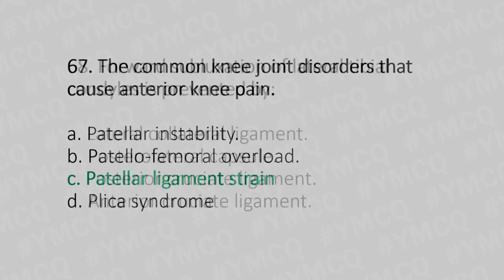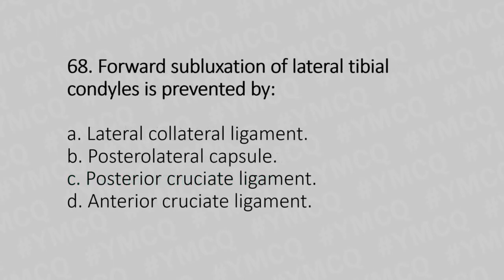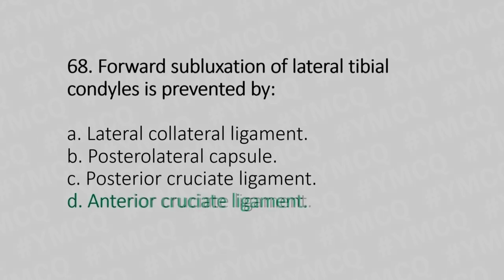Now let's move to question number 68. Forward subluxation of the lateral tibial condyle is prevented by. Option A: lateral collateral ligament. Option B: posterior lateral capsule. Option C: posterior cruciate ligament. Option D: anterior cruciate ligament. And the answer is Option D, anterior cruciate ligament.